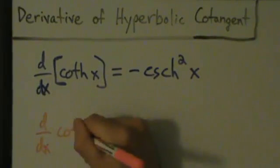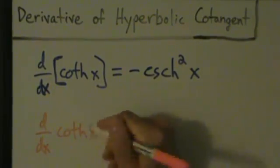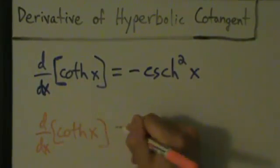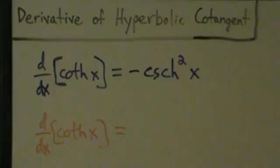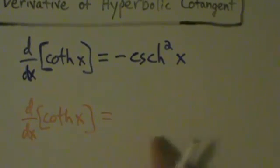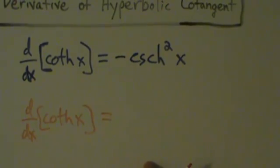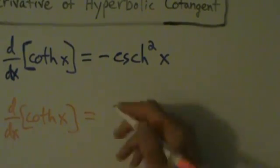So d/dx of coth of x. I want to write down some stuff here just to show you that there are a bunch of different ways we can go with this, but we're only going to do it one way. So let's go ahead and do it like this.